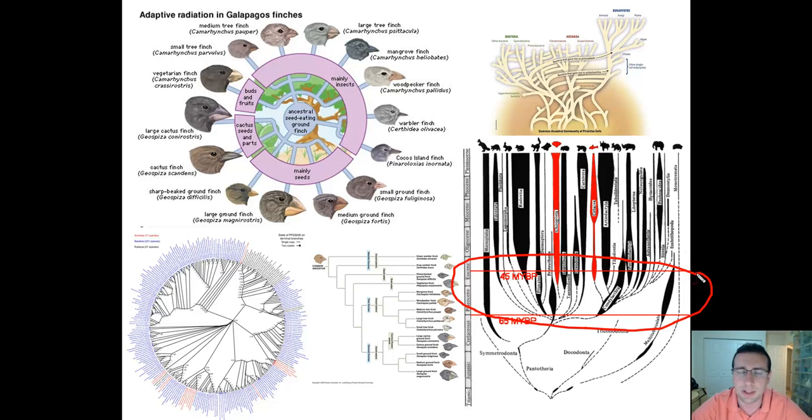You see similar adaptive radiation events when organisms colonize a new area of the world. For example, when the finches colonized the Galapagos Islands and they had no other competitors there, they also adaptively radiated to the different environments that they saw there. So adaptive radiation is something that you see past mass extinctions. You also see when organisms go to different kinds of environments and colonize different environments.